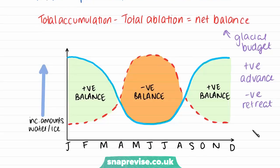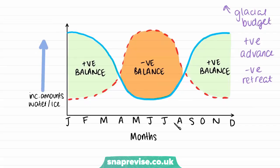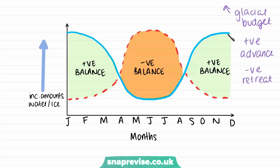This graph explains why this happens. For a glacier in the northern hemisphere, the winter months are January, February and December, and the summer months are May, June, July and August. The blue line represents accumulation — in winter months snowfall increases the water and ice going into the glacier, and as we move into summer this decreases. The dotted line shows ablation: less ablation occurs in winter, and as we move into summer the melting increases as temperatures rise, then drops again in winter.